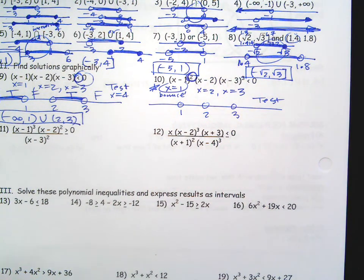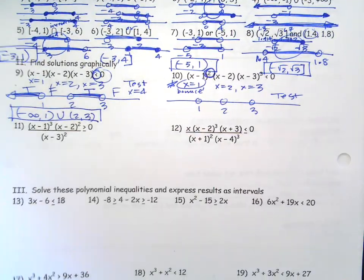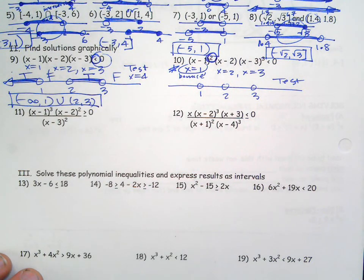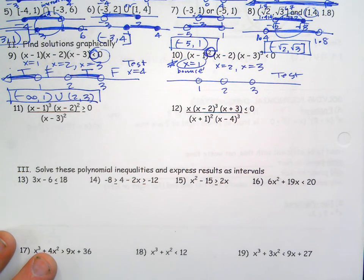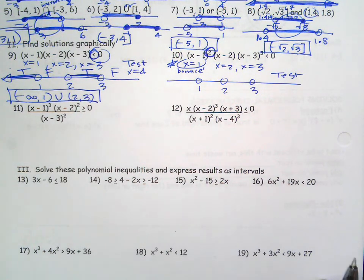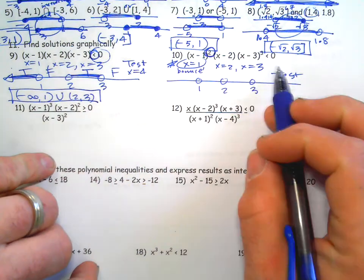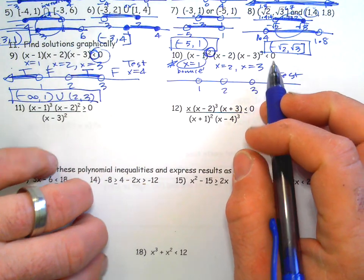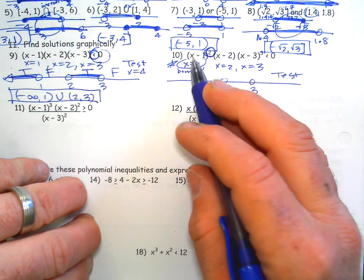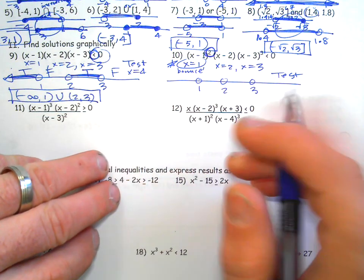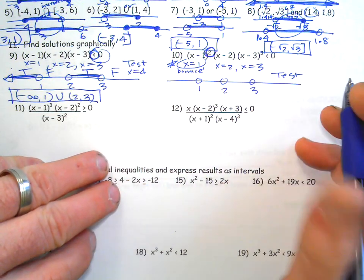For some reason the program I used to record this video cut out in the middle of those problems, so I'm going to start off where I left off. We're doing polynomial inequalities — that's what these are called. These are already on one side equal to zero, already factored, so a lot of the algebra work is done for you.